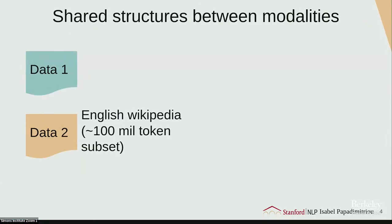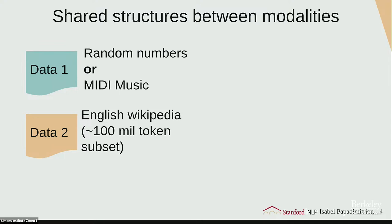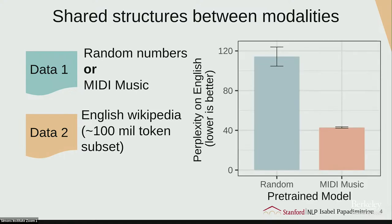Powerful machine learning models let us explore questions about language in new ways. We can use transfer learning between different types of data to understand things about language itself — what kinds of things can get transferred when thinking about language as a learnable system in the abstract. For example, even when there isn't a shared modality, we might want to transfer to English. We can start from either random numbers or from MIDI data — music data.